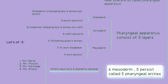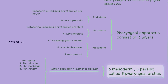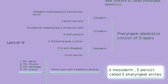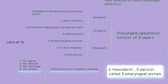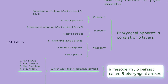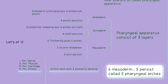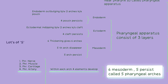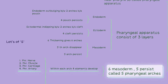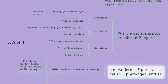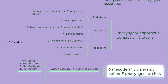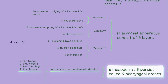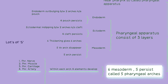Within each pharyngeal arch, four elements develop: the pharyngeal nerve, pharyngeal muscle, pharyngeal cartilage, and pharyngeal artery. The pharyngeal apparatus is a dynamic and highly coordinated system that plays a crucial role in the development of the head and neck structures. Any disruption or abnormalities during this process can lead to congenital anomalies and various disorders affecting the development of vital structures in the region.